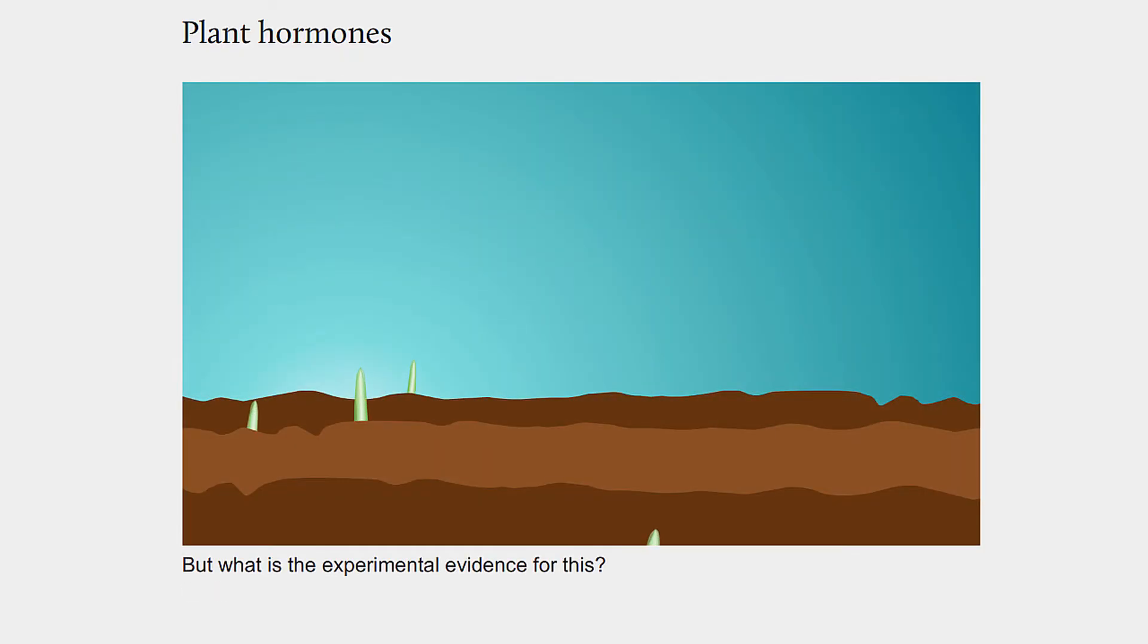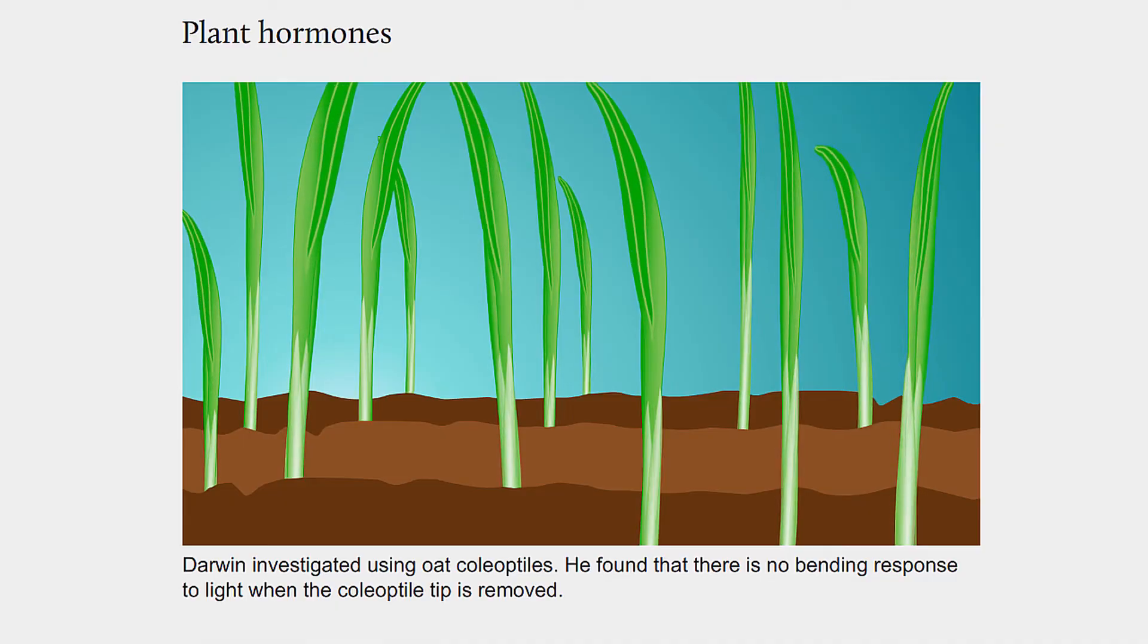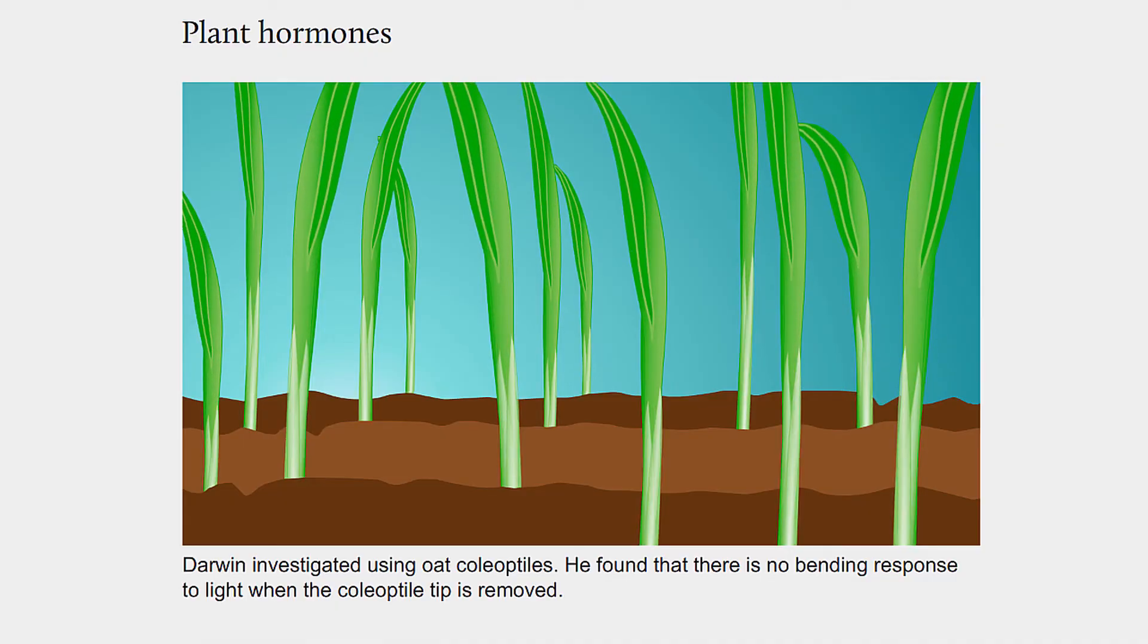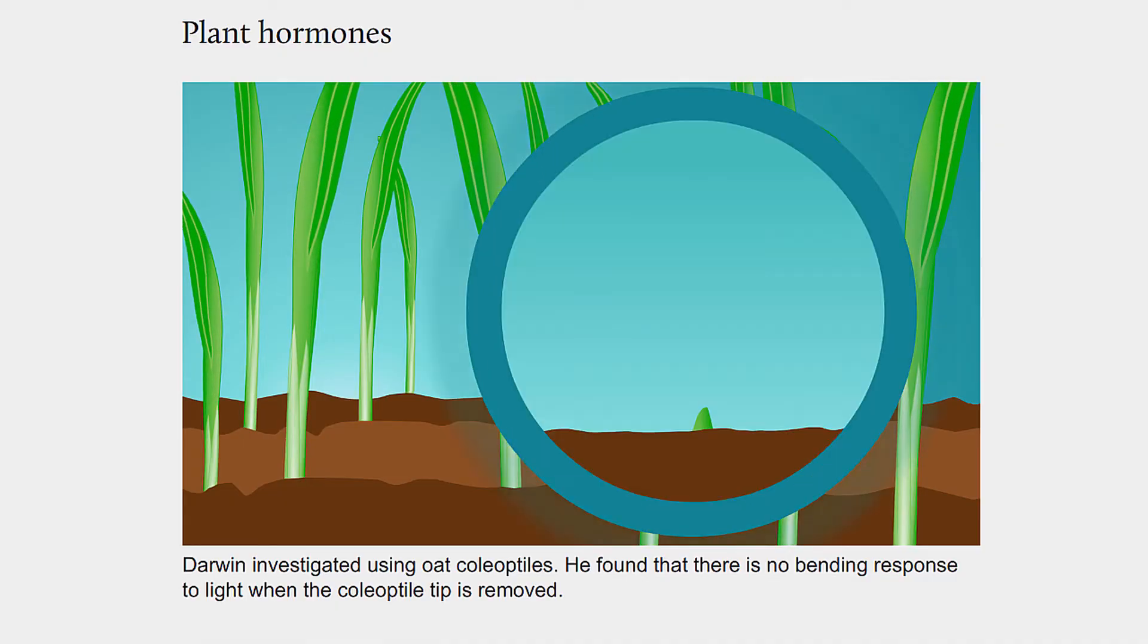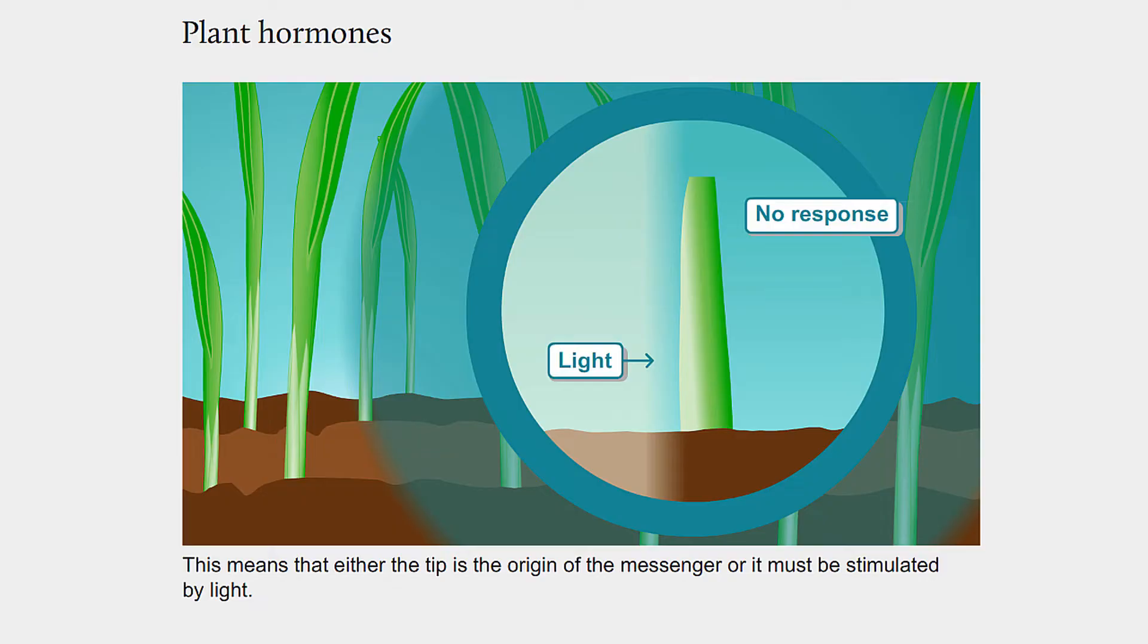But what is the experimental evidence for this? Darwin investigated using oat coleoptiles. He found that there is no bending response to light when the coleoptile tip is removed. This means that either the tip is the origin of the messenger, or it must be stimulated by light.